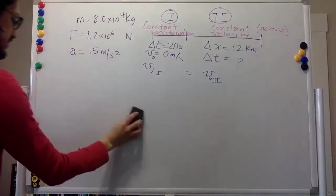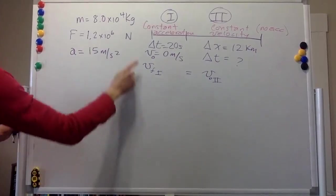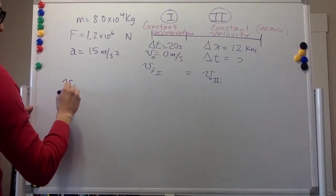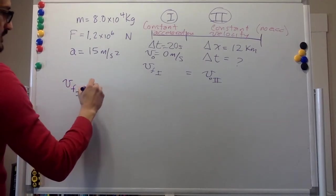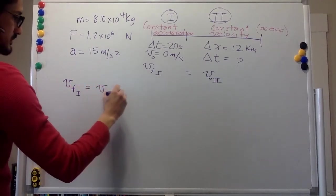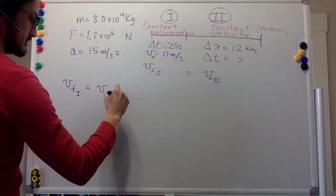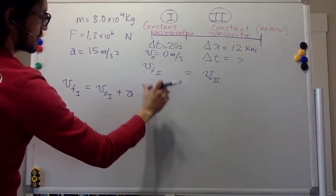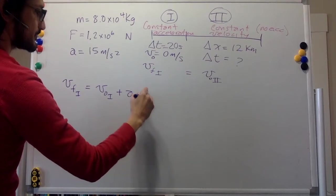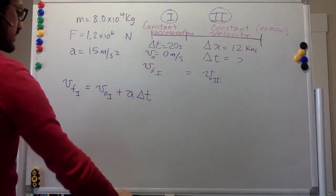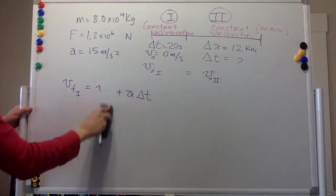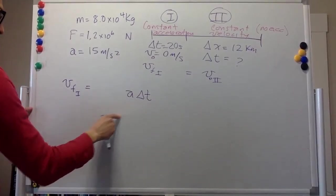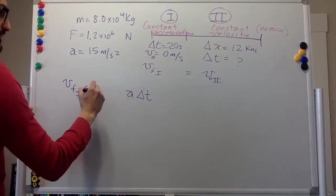So now we have time, initial velocity, and acceleration. And we want the final velocity of section 1. Let's say delta t. Okay, so initial velocity is zero. We can get rid of it.